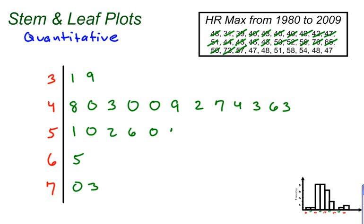And 57, 47, 48, 51, 58, 54, 48, and 47. So this gives me an idea, and I can look at all of these values in a little bit more organized way. 31, 39, 48, 40, 43, 40, 40, 49, and I can go all the way to 70 and 73. But there's one more thing I need to do.